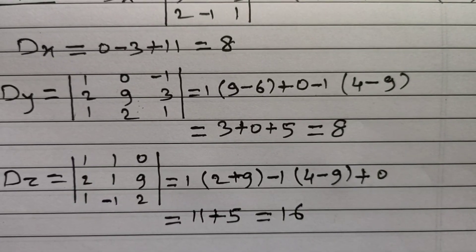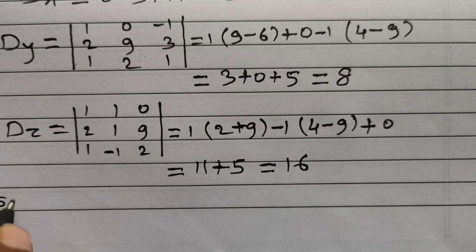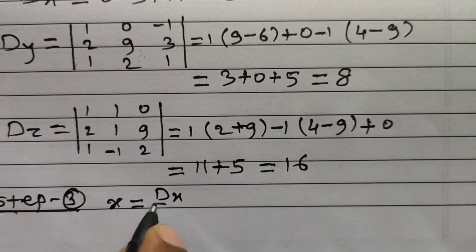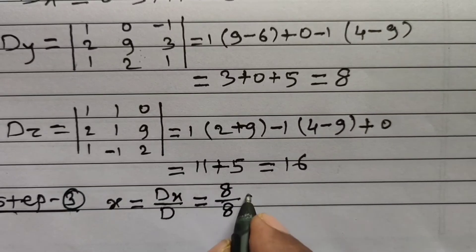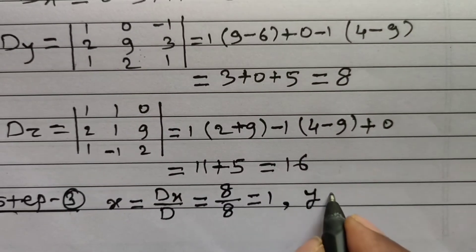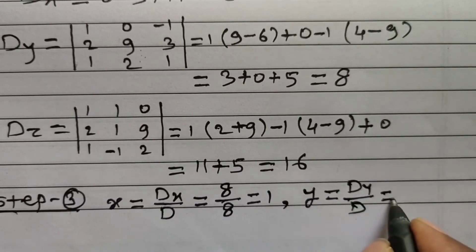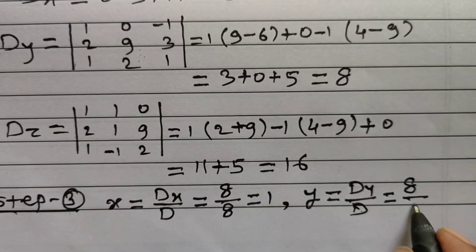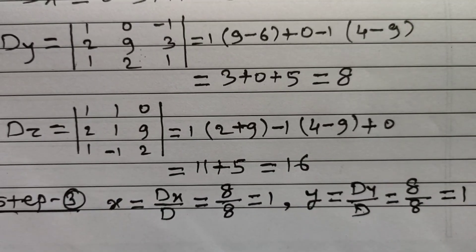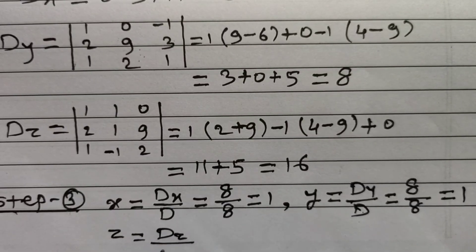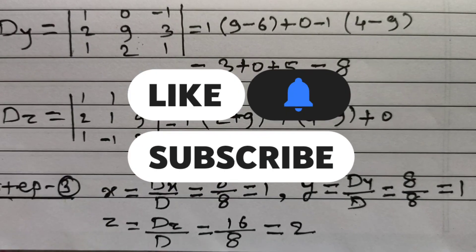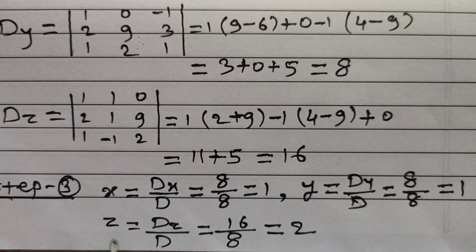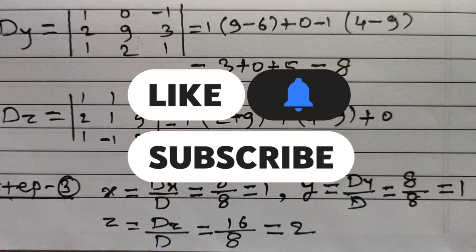Step number 3: the value of x equals Dx divided by D, which is 8 divided by 8, equal to 1. Then y equals Dy upon D, which is 8 divided by 8, also equal to 1. And z equals Dz divided by D, so 16 divided by 8, equal to 2. In this way, we have obtained the values: x is equal to 1, y is equal to 1, and z is equal to 2. This is the solution of the given sum.